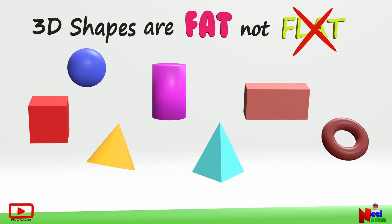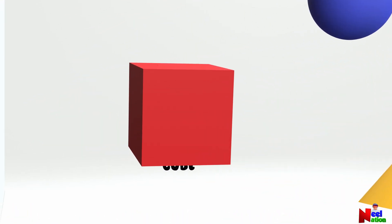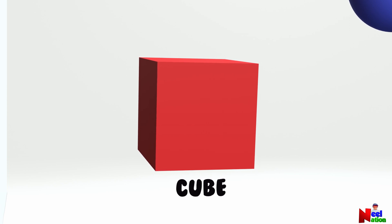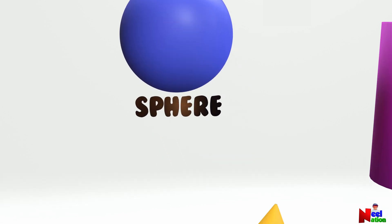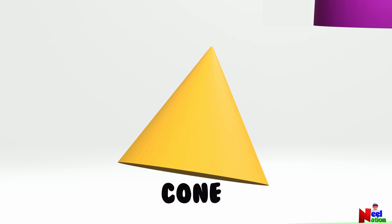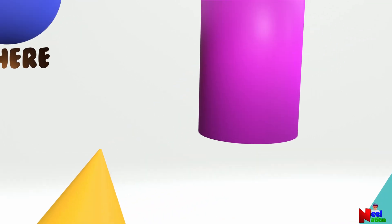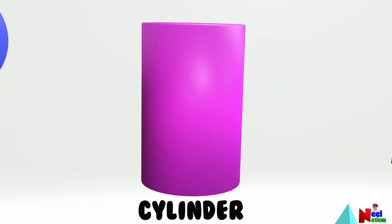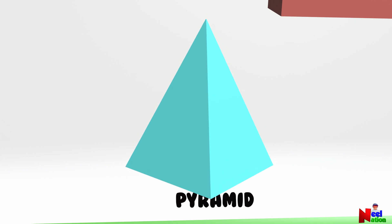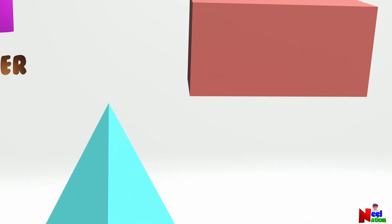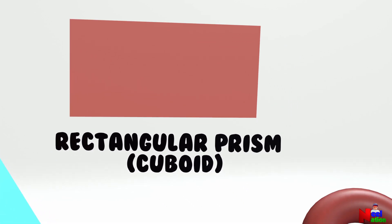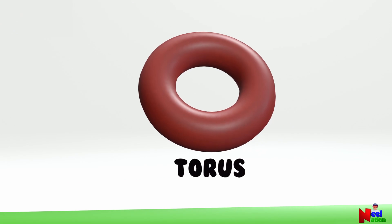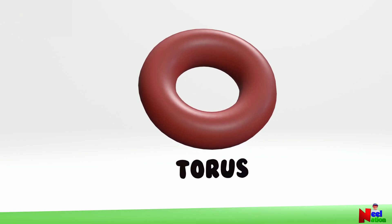Let's look at some of the 3D shapes. This is a cube. This is a sphere. This is a cone. This is a cylinder. This is a pyramid. This is a cuboid, or rectangular prism. And this is a torus.